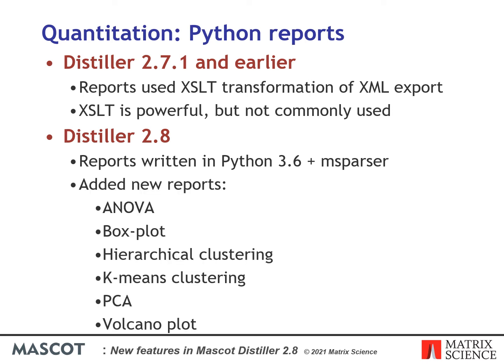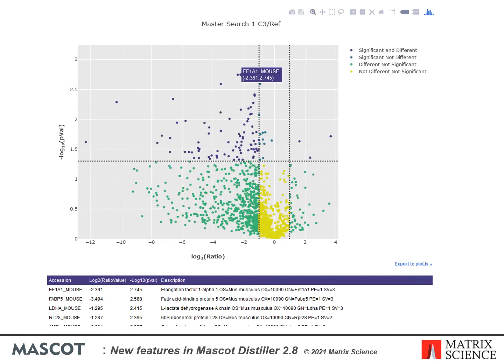We've taken the opportunity to add some new reports to Distiller, so you'll now find options to generate ANOVA, boxplot, various clustering reports including PCA, and a volcano plot. Here's an example of the volcano plot report for one ratio of a label free dataset, exported using the interactive JavaScript option so that hovering over a point on the graph displays the associated protein accession. This information is also presented in the set of tables below the graph.